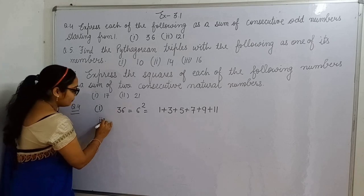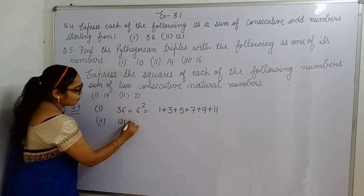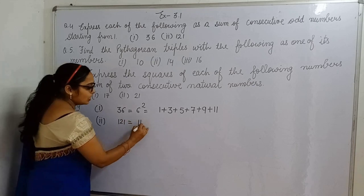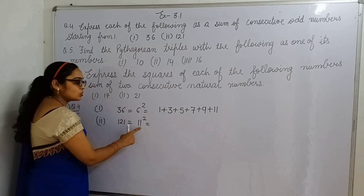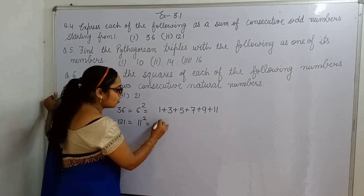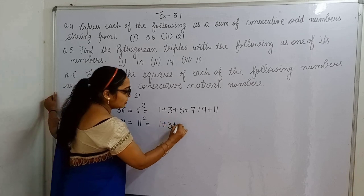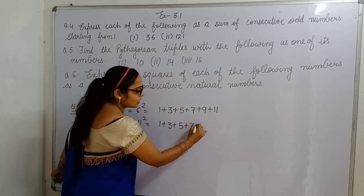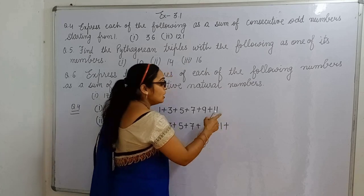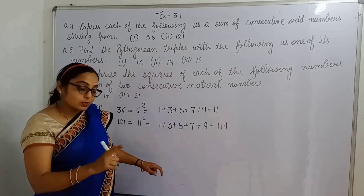Second part, one hundred twenty-one. Whose number square is this? Eleven square. So you can write this how? One plus three plus five plus seven plus nine plus eleven. These are six numbers.